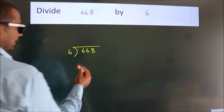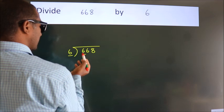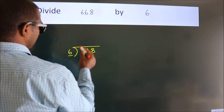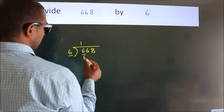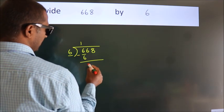Next, here we have 6, here 6. When do we get 6? In 6 table. 6 once, 6. Now we should subtract. We get 0.